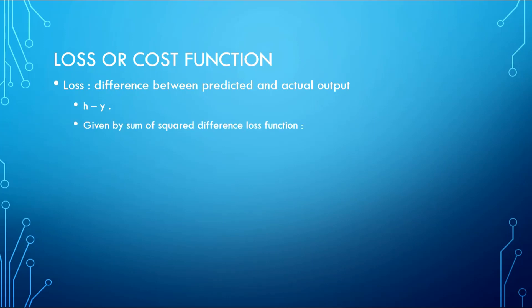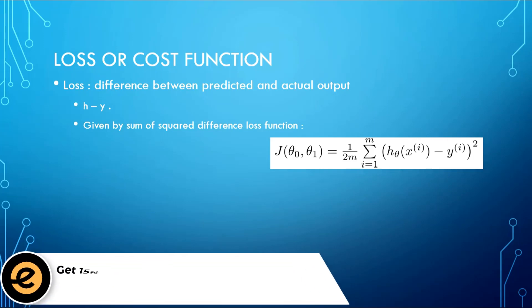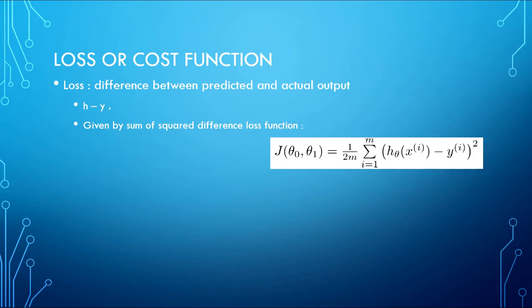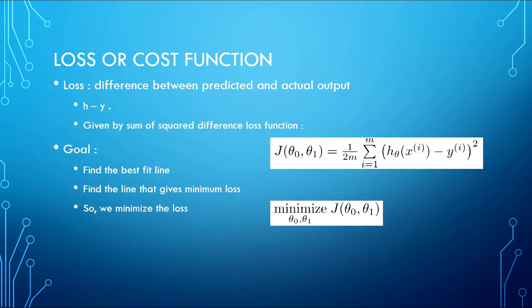This loss is given by the sum of squared difference loss function. We basically square the difference between our prediction and the actual output and sum it for all the training examples — starting from the first training example to the last — then divide by 2m. The goal of Linear Regression is to find the best fit line, that is, the line that gives the minimum loss. So now we want to minimize this loss.